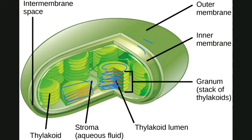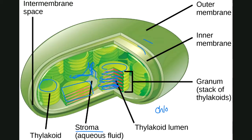The liquid in between the grana is called the stroma. Notice that the discs are green in color — and they truly are green. This is what gives plants their green color, and they're green because of the chlorophyll pigment. Plants have chlorophyll a and chlorophyll b.